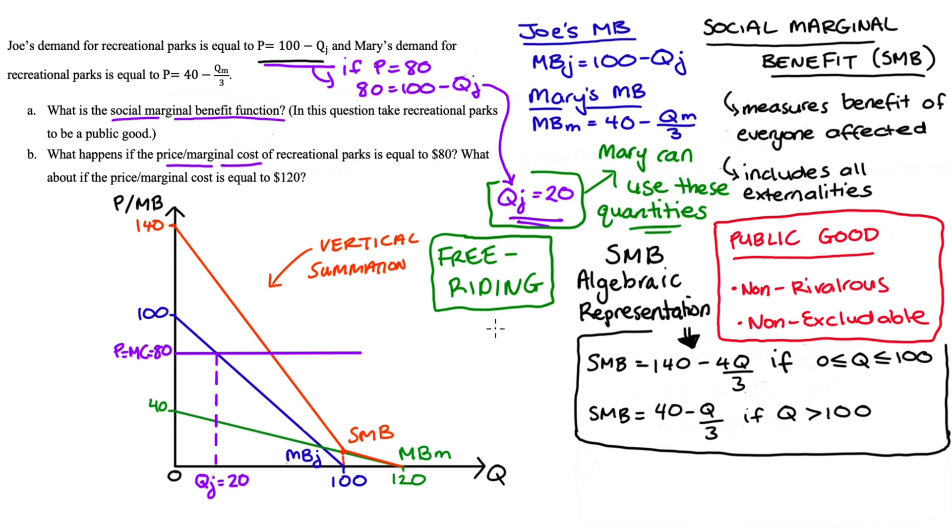Now apart from free riding another problem that we can see here is with under production. If we assume that the marginal cost of production includes all costs so there are no externalities in production then we can actually identify our marginal cost here as being equal to our social marginal cost.